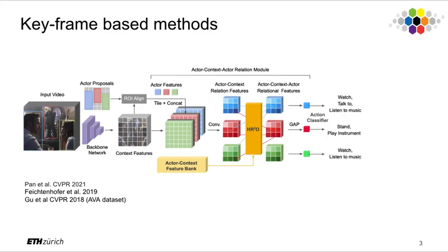Keyframe-based methods are common in recent work to solve this problem because they are simple and efficient. Here, a set of bounding box proposals are generated for a keyframe in parallel. Spatial temporal features are computed using a 3D backbone network. Proposals are then used to extract features by replicating proposals in the time direction, resulting in features accumulated for each proposal in a cuboid shape.